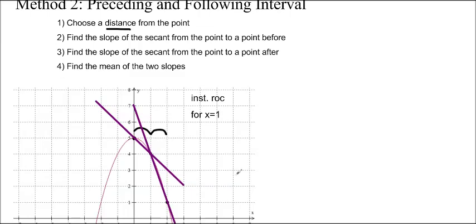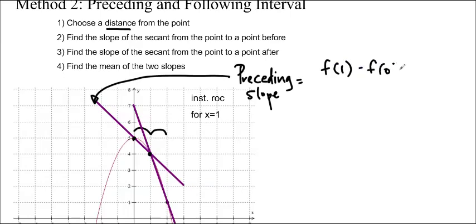So if I find those slopes, it's going to be the first one. So the preceding, which is before, is this one right here. So it goes from before the point to the point. The preceding slope is f of 1 minus f of 0 over 1 minus 0. We can see that f of 0 is 5 and f of 1 is 4. So we'll just use those points. So 4 minus 5 over 1, that gives us negative 1.